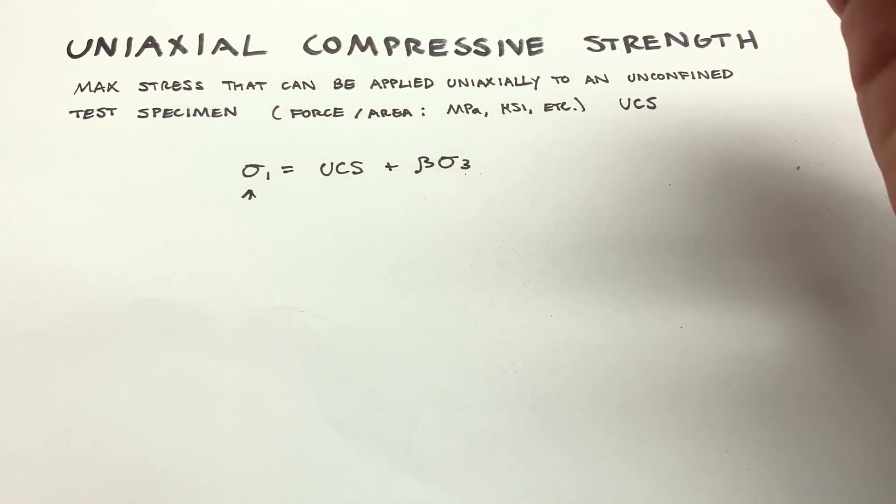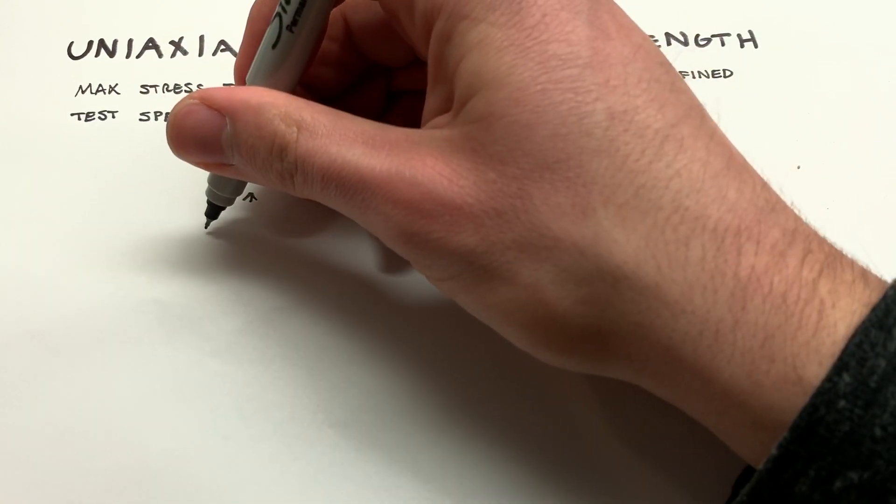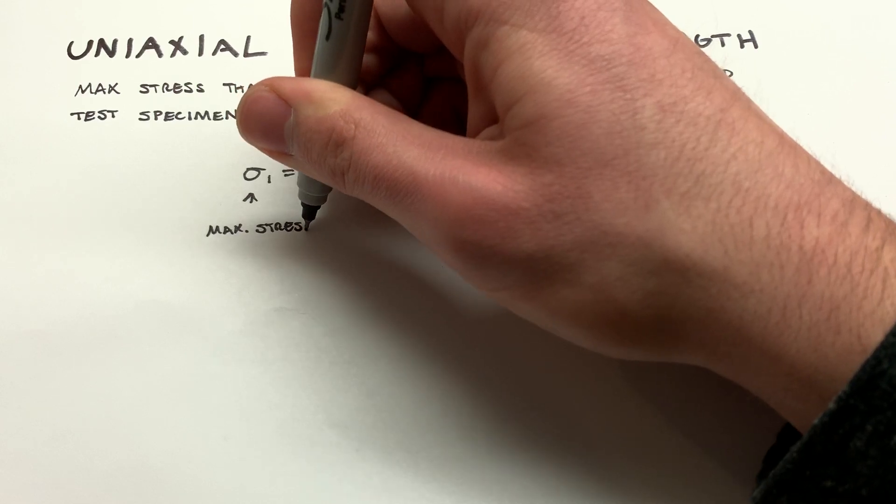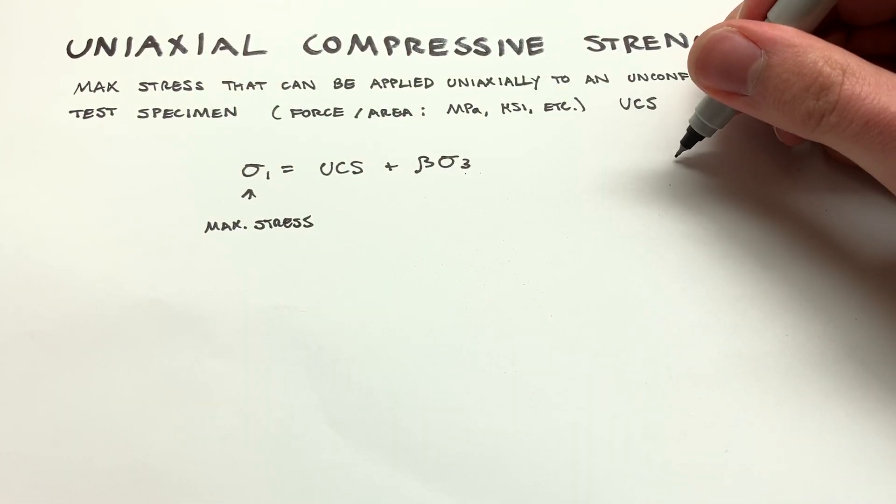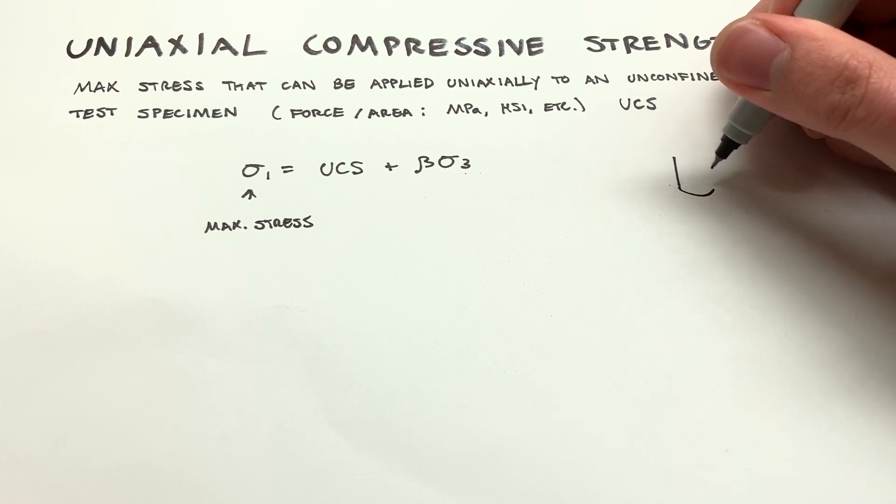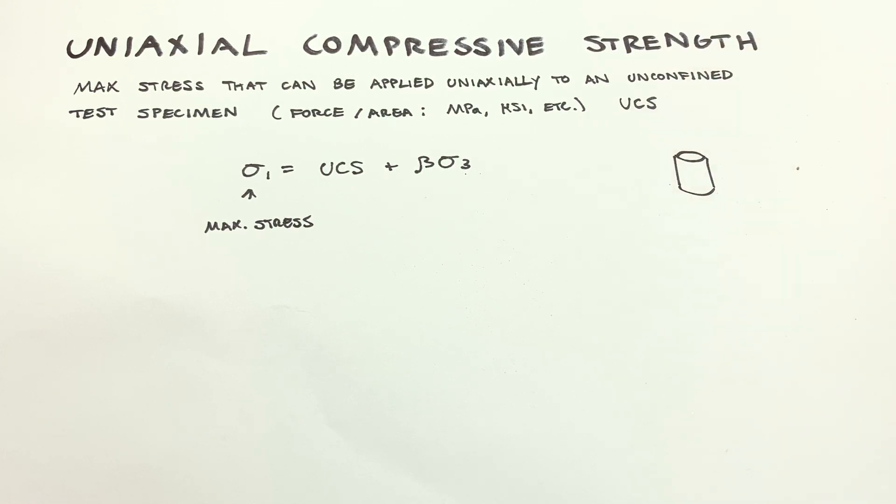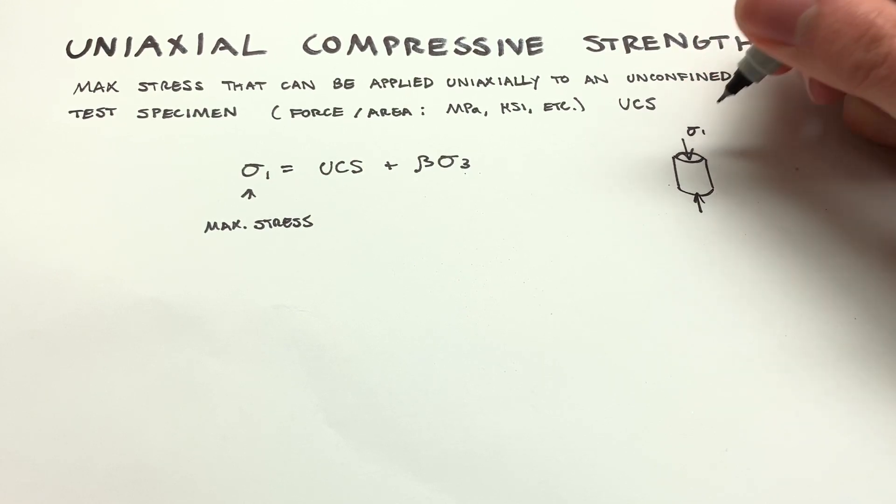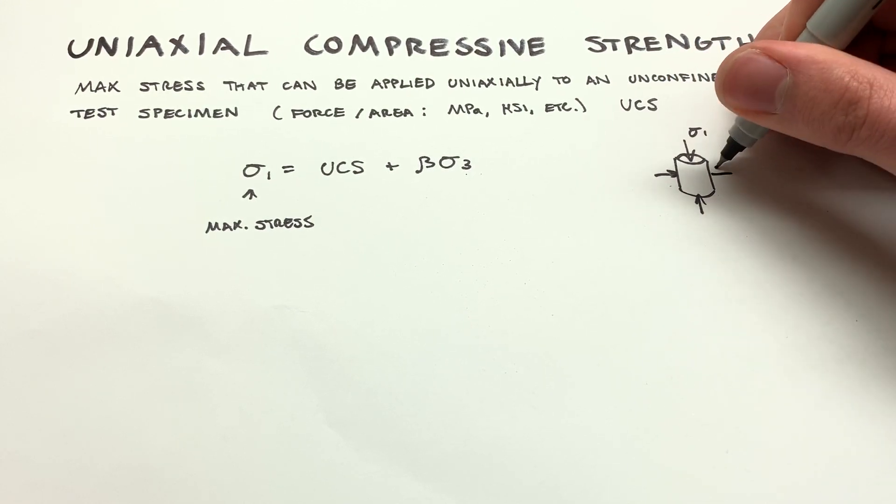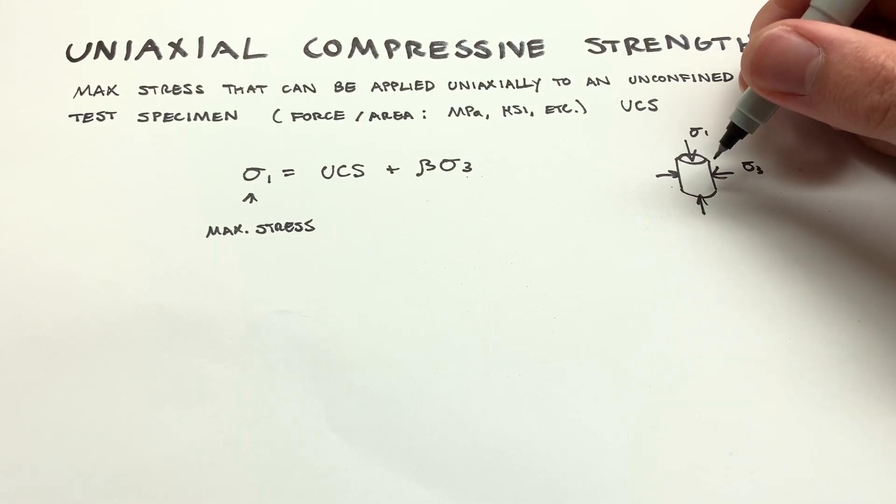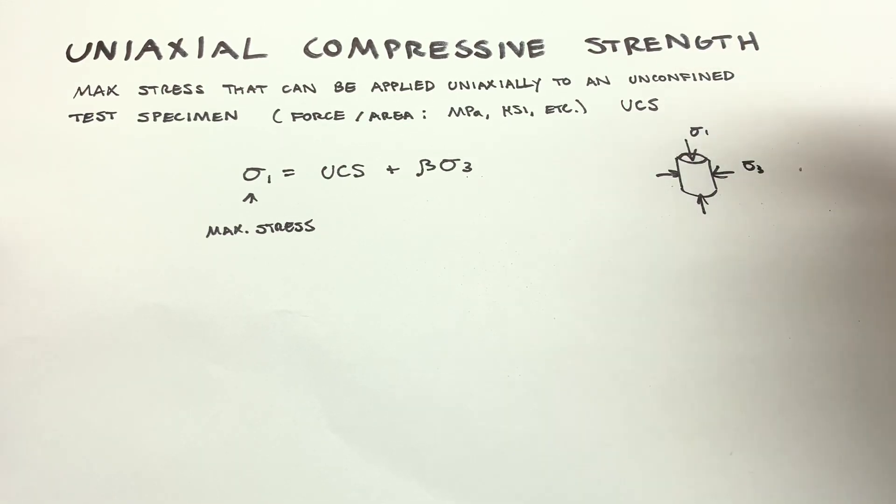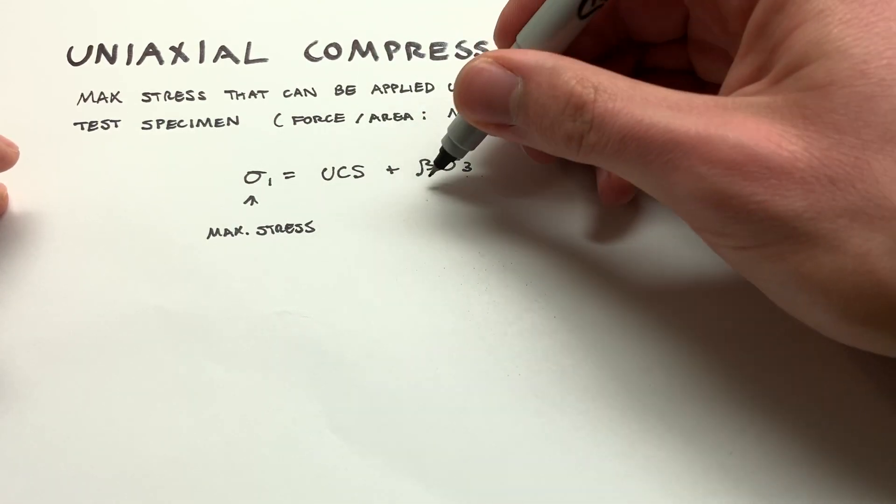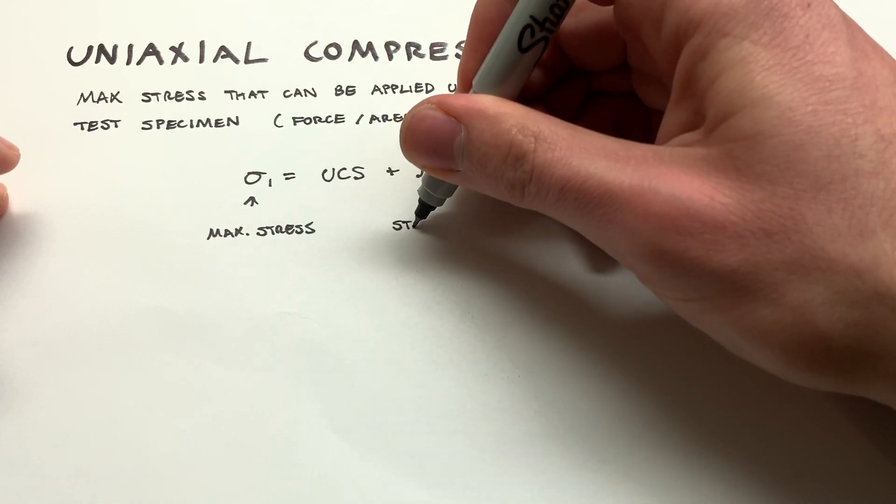So we can break down the pieces of this. Sigma 1 is going to be the maximum stress that can be applied in the axial direction. If we take an example of another cylinder, this would be sigma 1, and then sigma 3 would be the confining stress, which would be much smaller than sigma 1. The UCS is the uniaxial compressive strength.